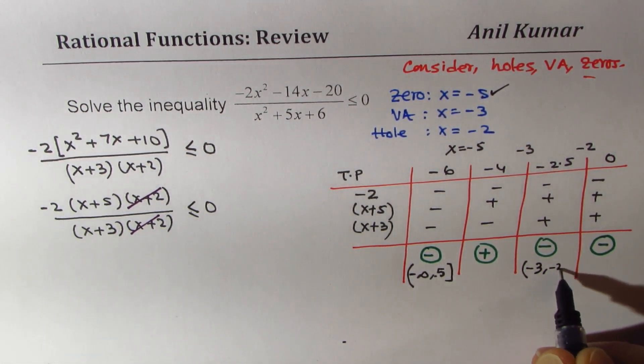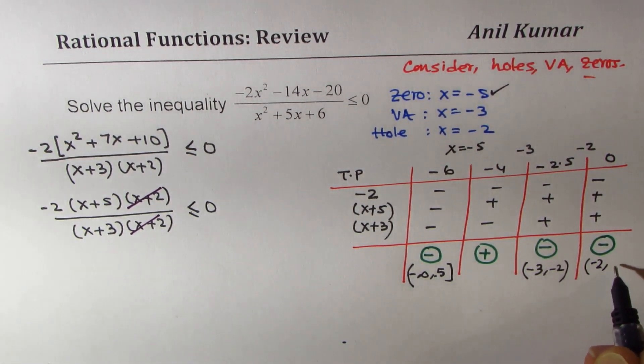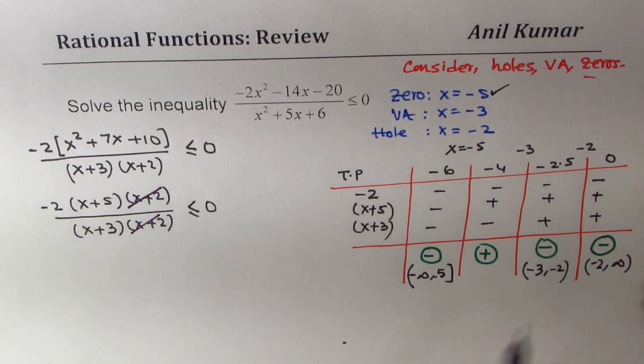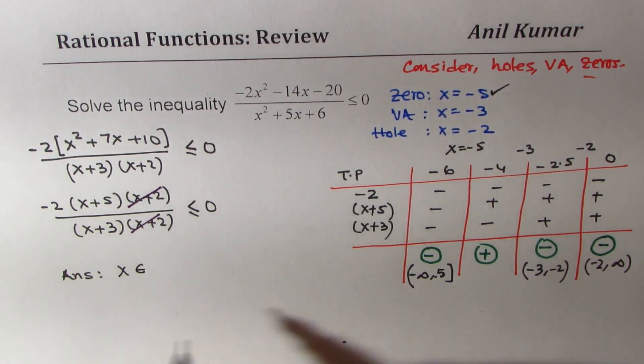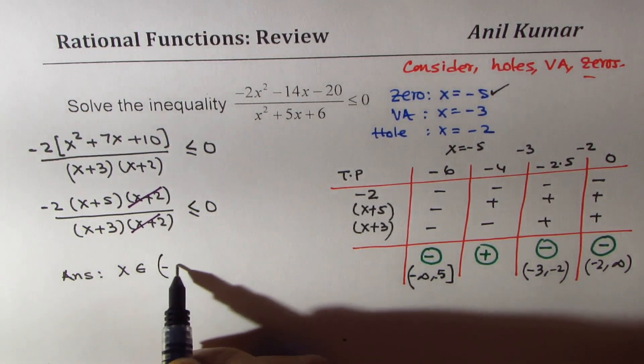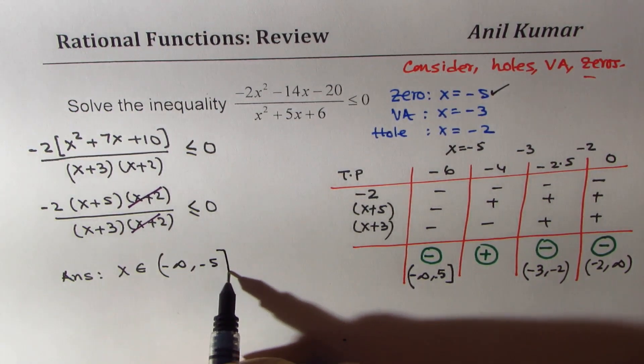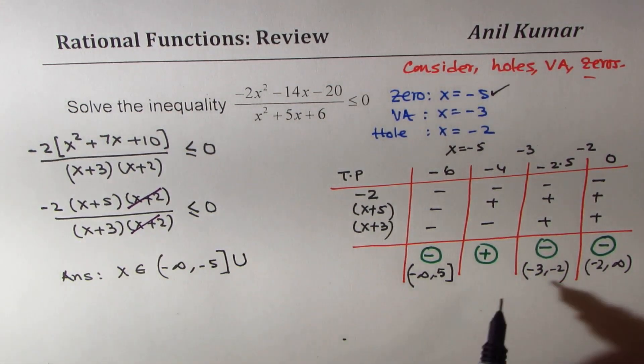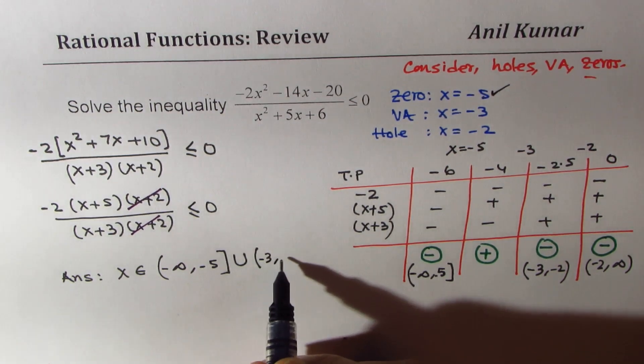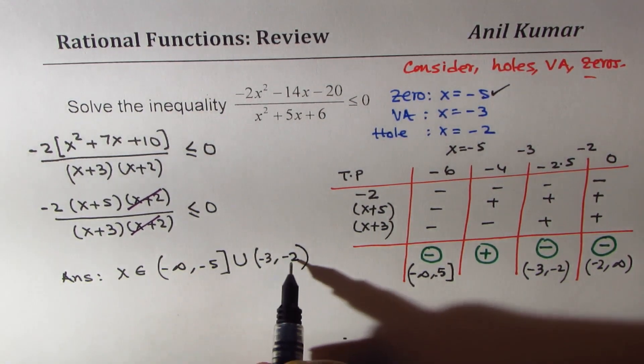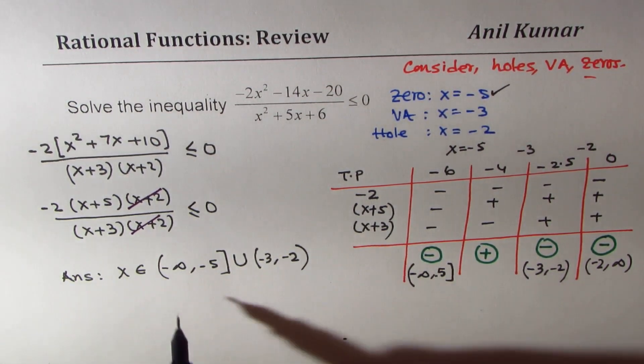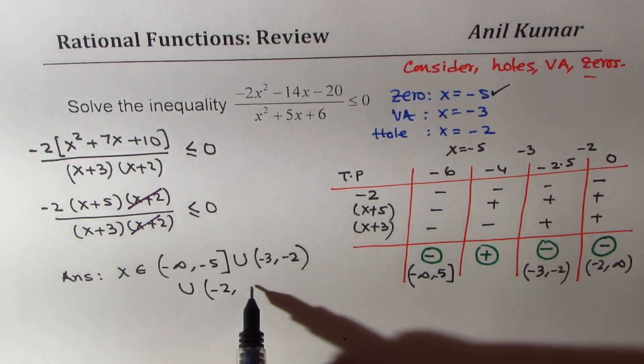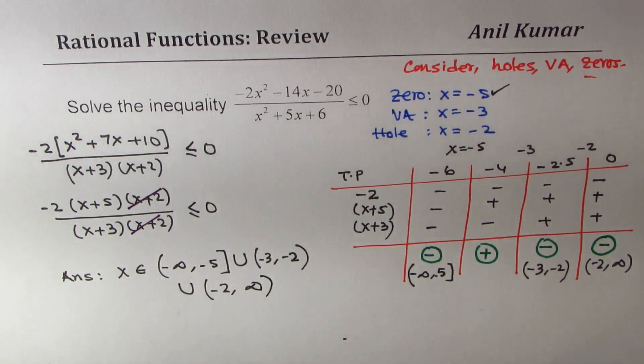So from minus 3 to minus 2, we do have a solution, and then from minus 2 to infinity. So from this table, we get our answer as x belongs to the interval minus infinity to minus 5, where 5 is included, union minus 3 to minus 2, both cannot be included, they are discontinuities, they are not a part of your domain, and then from minus 2 to positive infinity. Do you see that? So that is how we are going to solve this inequality.